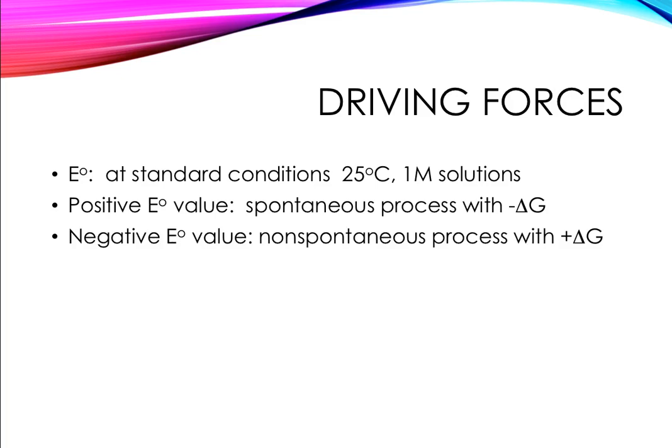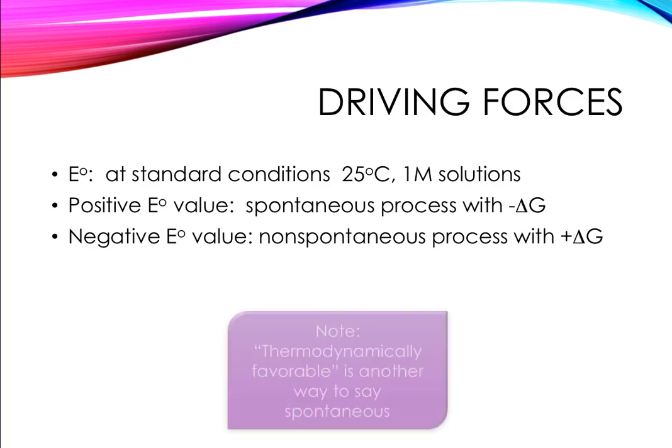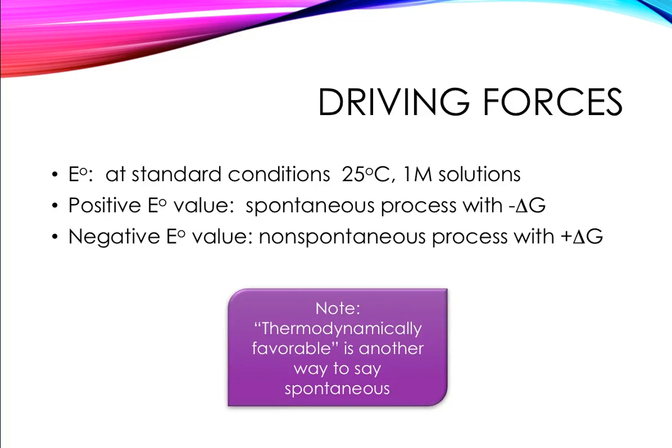If you have an electrolytic cell and E cell is negative, that's saying that delta G will be positive and it will be a non-spontaneous process. Thermodynamically favorable is another way to say spontaneous. The College Board has started using this terminology of thermodynamically favorable or not thermodynamically favorable instead of saying spontaneous or not spontaneous. You need to be familiar with both sets of terms because your textbook may use one and the test will say something else.